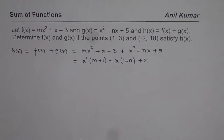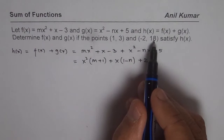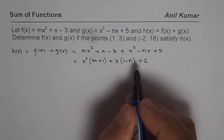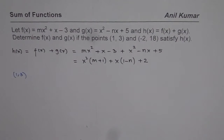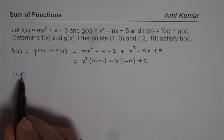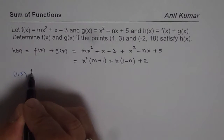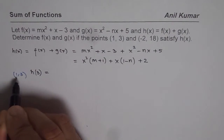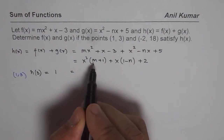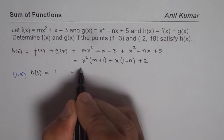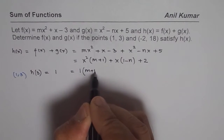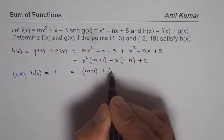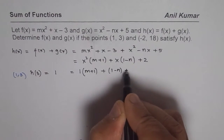We are given that two points (1, 3) and (-2, 18) lie on this function. Substituting the point (1, 3) means x equals 1 and h of x equals 3. So h of 1 equals 3: substituting x equals 1 gives 1 squared times (m plus 1), plus (1 minus n), plus 2.